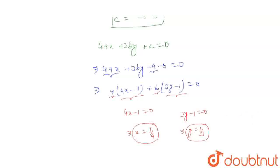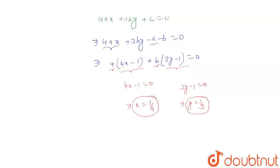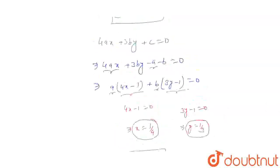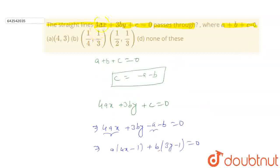Means we got the value of the intersection point which is P, 1 by 4 comma 1 by 3. This is the point from where this straight line will pass through and the option will be b. Thank you.